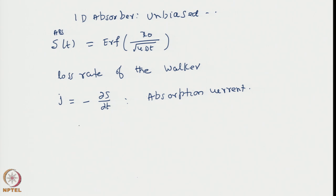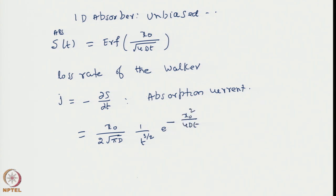Upon differentiating the error function, we can show that this becomes x₀ divided by 2√π, times (1/t^(3/2)) times e^(−x₀²/4Dt). This is because the derivative of the error function is the Gaussian itself from its definition, and then you differentiate 1/√t and you get this.